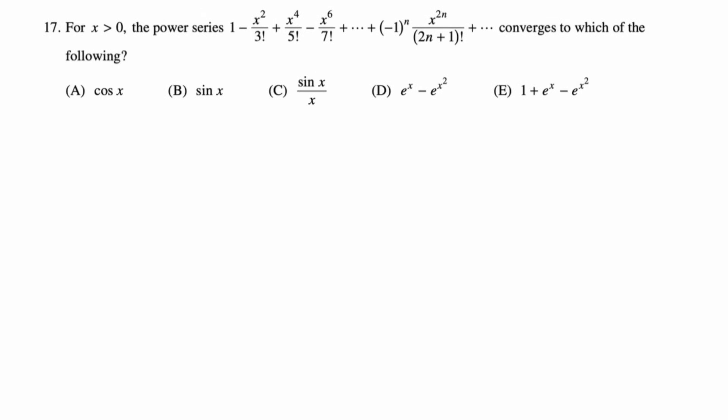The power series is 1 − x²/3! + x⁴/5! − x⁶/7! + ⋯. I notice all factorials are odd, which reminds me of sine. The series for sine is x − x³/3! + x⁵/5! − x⁷/7! + ⋯. Dividing everything by x gives exactly the series shown, so this is sin(x)/x. You should have sine, cosine, e^x, and 1/(1 − x) memorized.